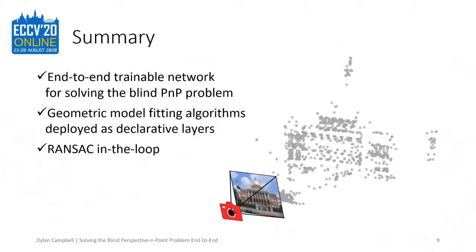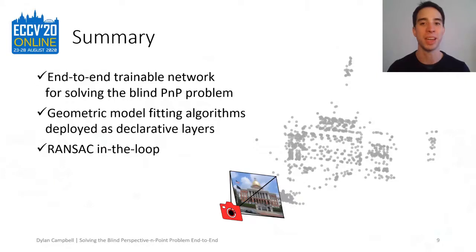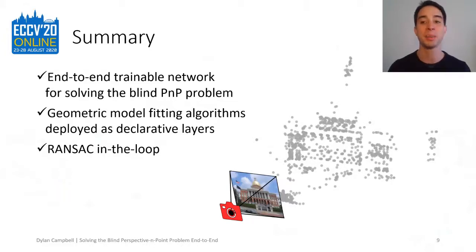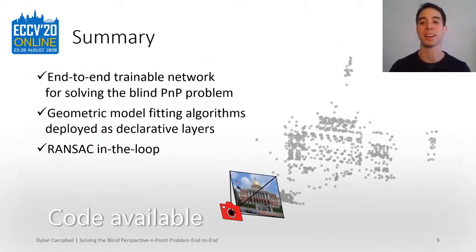In summary, I have presented the first end-to-end network for solving the blind PnP problem. The key contribution is demonstrating how a variety of algorithms from visual geometry and elsewhere can be deployed as declarative layers in the network. This includes the novel use of RANSAC within the training loop without interfering with backpropagation. Thank you.